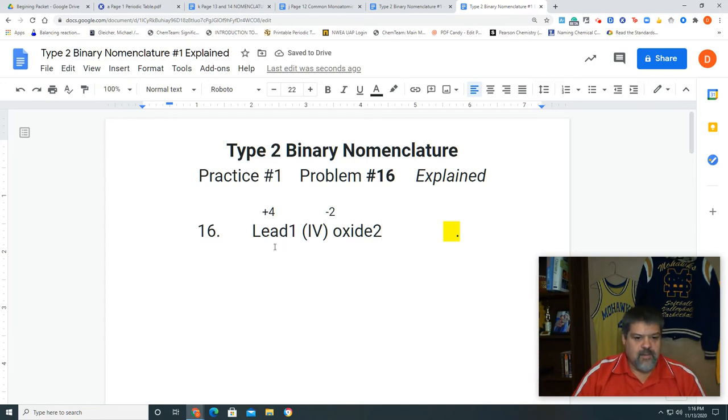What did that really do? Well, if I do my charges, I said plus 4 times 1 is plus 4. A negative 2 times 2 is a negative 4. So my total overall charges cancel each other out at 4 and 4. But now we have our reduced numbers that we have.